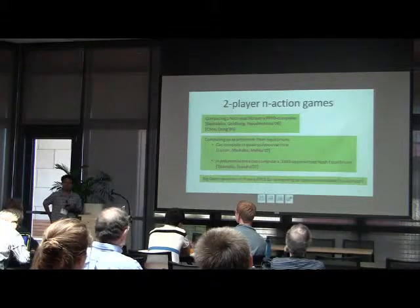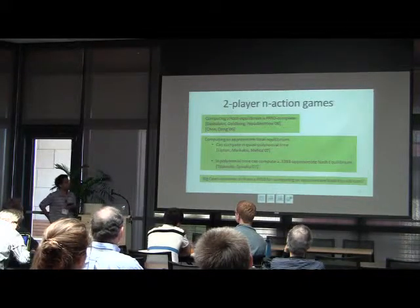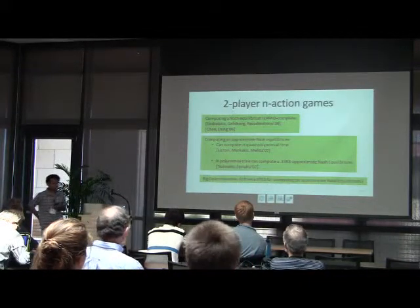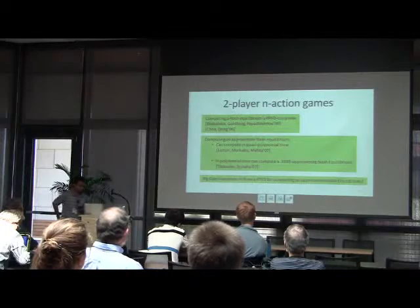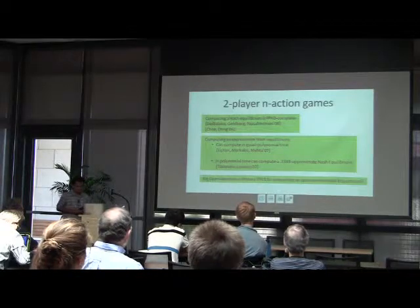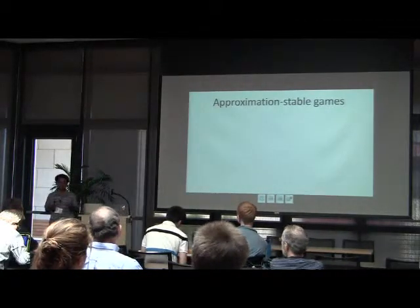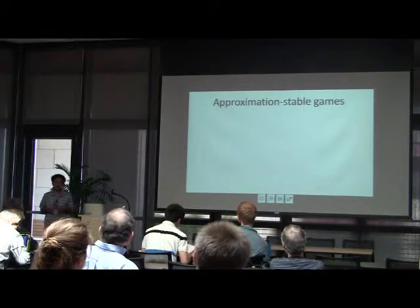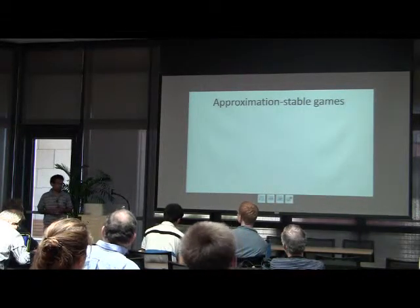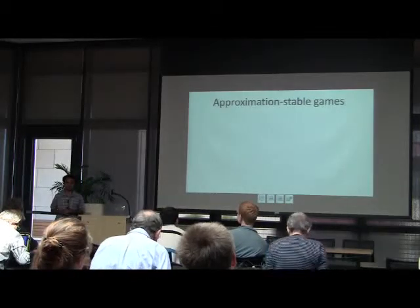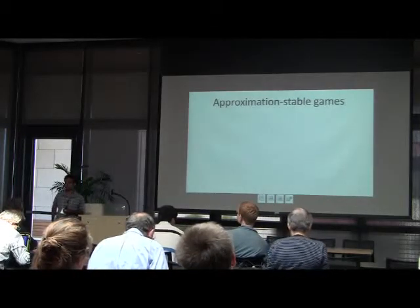The best we can do right now in polynomial time is a 0.339 approximate Nash equilibrium. So what we tried to do was define a class of games called approximation stable games, which are reasonably well motivated, and then study whether some of these quantities become easy to compute for such games.